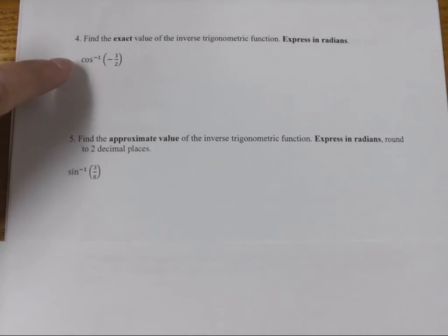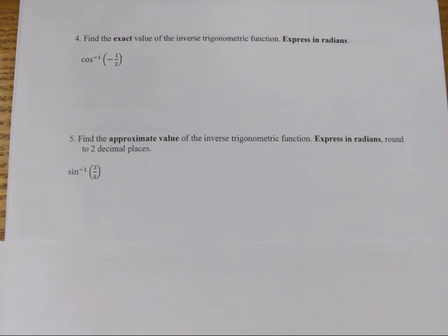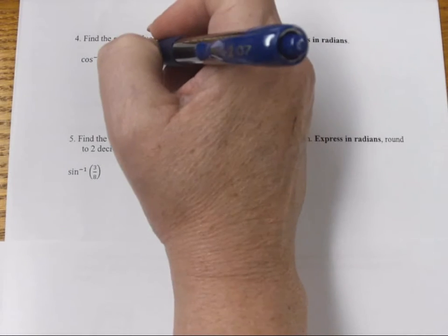We can look at our unit circle, and in quadrant one, we look at cosine. Cosine is equal to one-half at what angle? We know that pi over 3 gets us cosine of one-half.